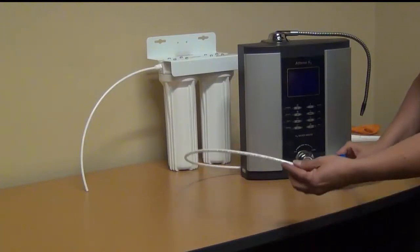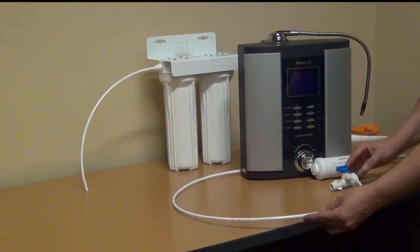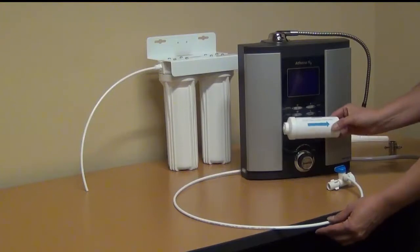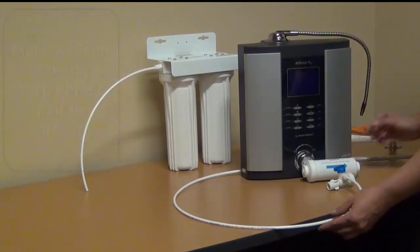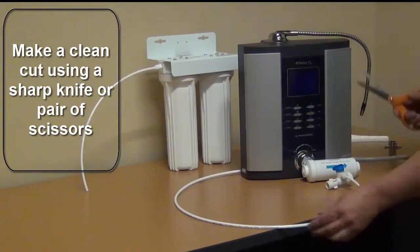So somewhere in this tubing line that's supplying the water, you'll find a good spot where you're going to install your EOS, and you'll make a clean, straight cut in the tubing.